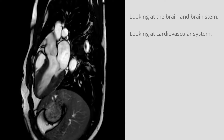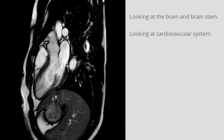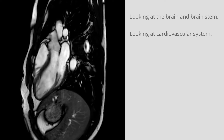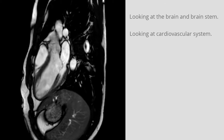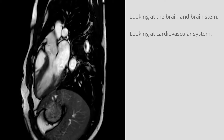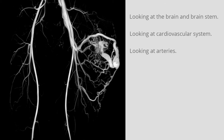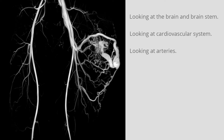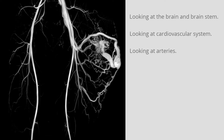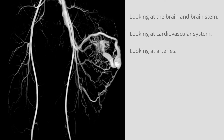Looking at the heart and other parts of the cardiovascular system — this practice is known as cardiovascular MRI. Measuring flow velocities of blood throughout the body can be done with phase contrast MRI. Looking at arteries to identify stenosis or aneurysms — this practice is known as magnetic resonance angiography.